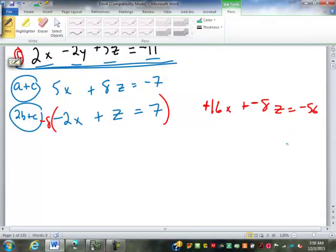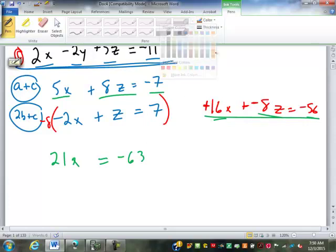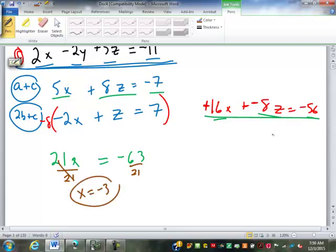Everybody, any questions so far? Do you see where this equation here came from? You're confused, Richard. Right here. So, I've got 5X and 16X is 21X. 8Z, negative 8Z is gone. Equals negative 7 and negative 56 is a negative 63. So, we're going to divide by 21. 1X is negative 3. We now have X.